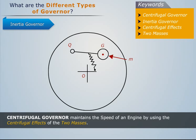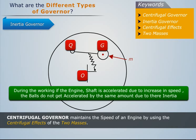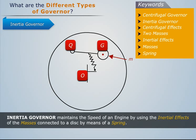In the inertia governor, a mass M having its center at G is fixed to an arm QG, pivoted to a rotating disc on the engine shaft at Q. The points Q, G, and the center of rotation O are not collinear. During working, if the engine shaft is accelerated due to an increase in speed, the balls do not get accelerated by the same amount due to their inertia. Thus, the inertia governor maintains the speed of an engine by using the inertial effects of the masses connected to a disc by means of a spring.